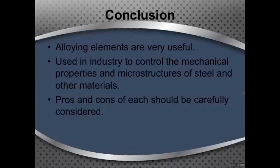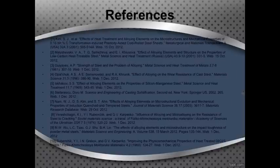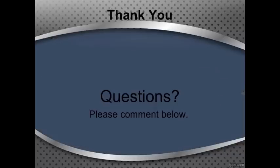Some of the conclusions that can be drawn from this video are that alloying elements can be a very useful tool. They're used regularly in industry to control several different mechanical properties as well as the microstructures of steels and other materials. Their pros and cons should be carefully considered before they're added, as they can all have positive and negative effects on a steel depending on the application. Here is a list of the references used for this project. Thank you for your time. Again, my name is Jarrett Nelson — if you have any questions or comments, please feel free to comment below on the video.